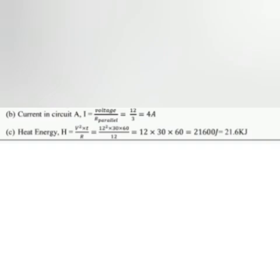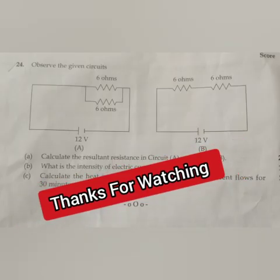Answer: Heat energy H = V²t/R = (12² × 30 × 60)/12 = 12 × 30 × 60 = 21600 joule = 21.6 kilojoule.